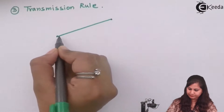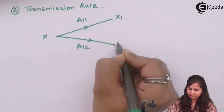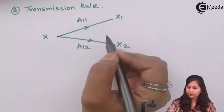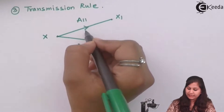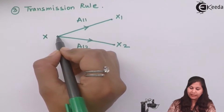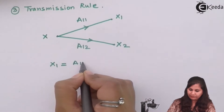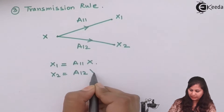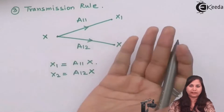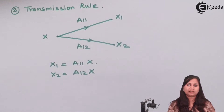The third rule is the transmission rule. If we have an output node X with branches going out to nodes X1 and X2, where a11 is the gain of one branch and a12 is the gain of the other, then X1 = a11·X and X2 = a12·X. The value designated by a node is equally transmitted to all outgoing branches - it is not divided between them but multiplied by each branch's path gain.